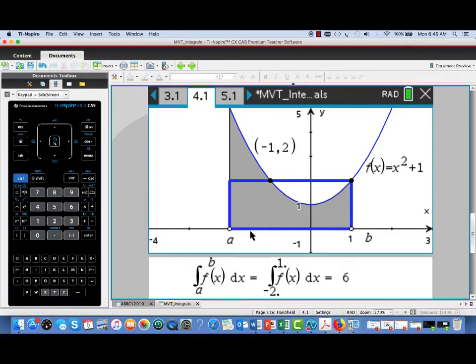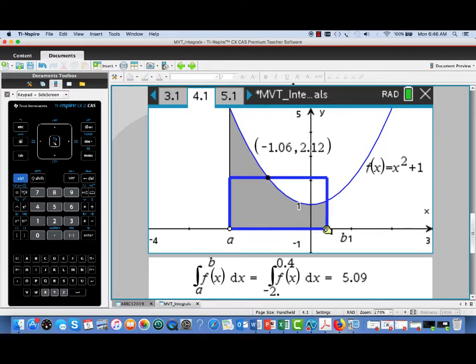Since the length of the interval is 3, the average value would be 6 divided by 3 or 2. And notice here's a point at x equal negative 1 as well as x equal positive 1, where the function value is exactly equal to 2.